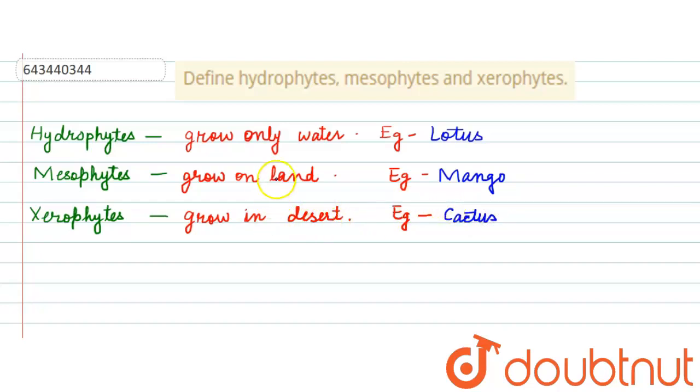In this question, we studied hydrophytes which grow only in water - example is lotus. The second one is mesophytes, plants that grow on land and need sufficient water and soil to live - example is mango. The last one is xerophytes, plants that grow in deserts where there is very high temperature with low availability of water - example is cactus. This is all for this question.